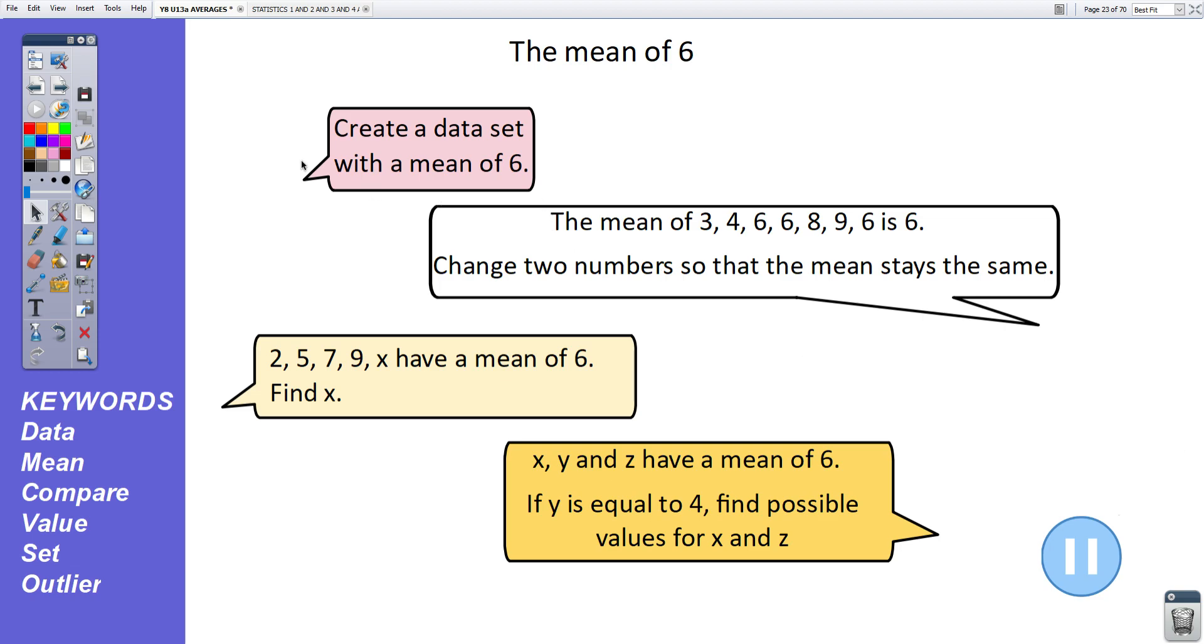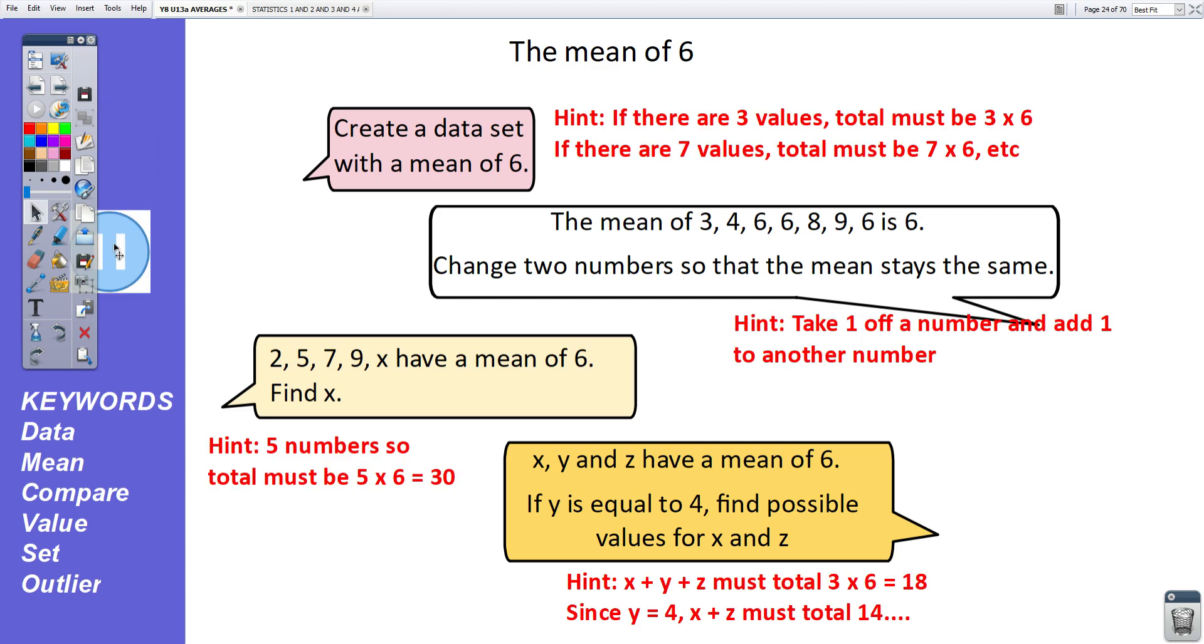OK, here are some hints to help you with the questions. Again, pause the video and unpause it when you're ready to check your answers. OK, here are the answers. Create a data set with a mean of 6. If you add 3 data values, that add up to 3 times 6. So 10, 5, and 3 add up to 18. If you add 4 data values, that add to total 24. 5 data values, that add to total 30. And so on. Lots of different possible answers.